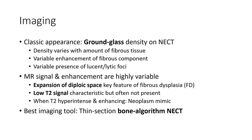Imaging classic appearance: ground glass density on non-enhanced CT. Density varies with amount of fibrous tissue, variable enhancement of fibrous component, and variable presence of lucent and lytic cysts. T1 and T2 signal and enhancement are highly variable. Expansion of the diploe space is a key feature of fibrous dysplasia. Low T2 signal is characteristic but often not present; T2 hyperintense and enhancing foci can mimic other lesions.